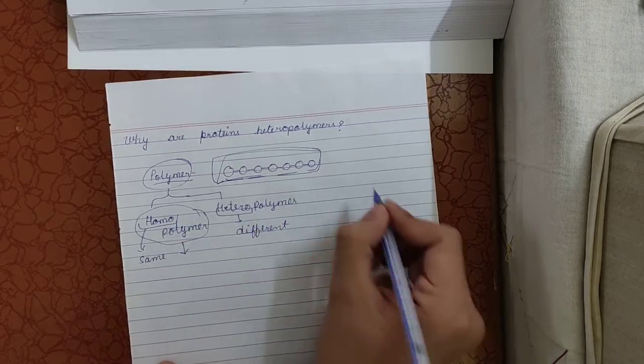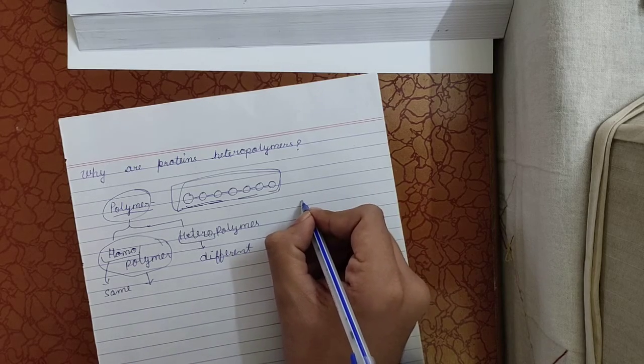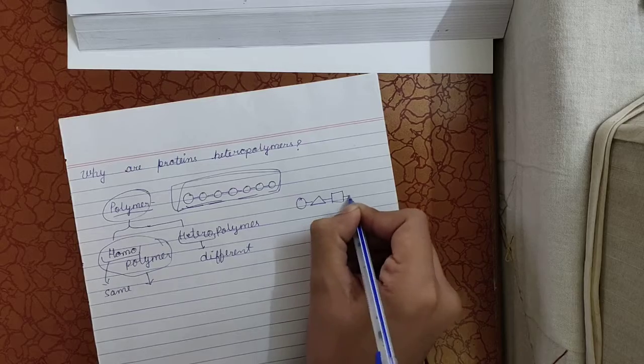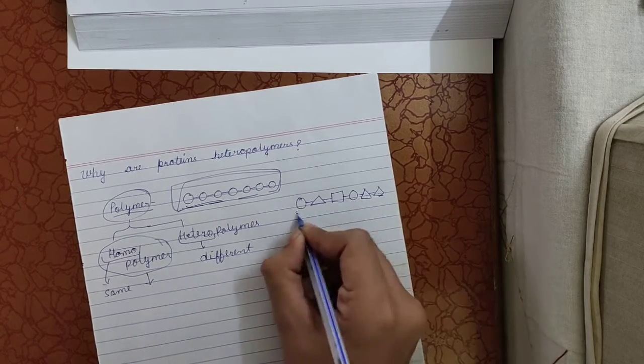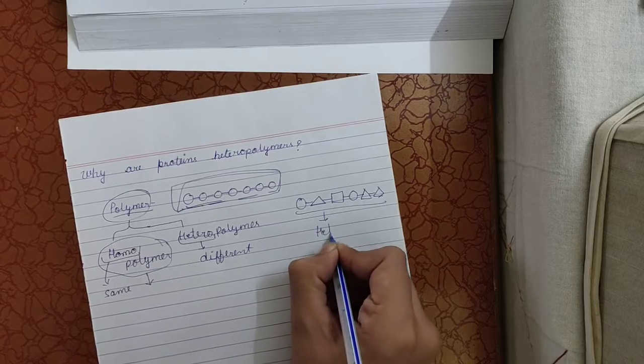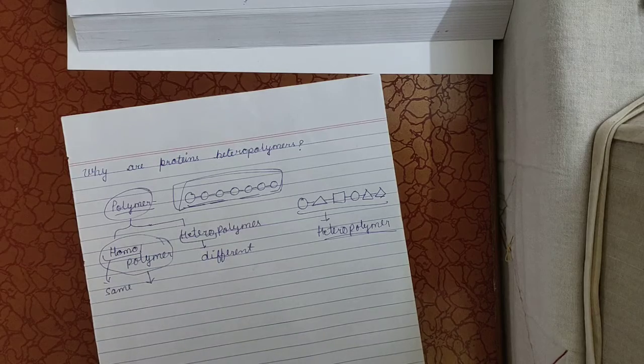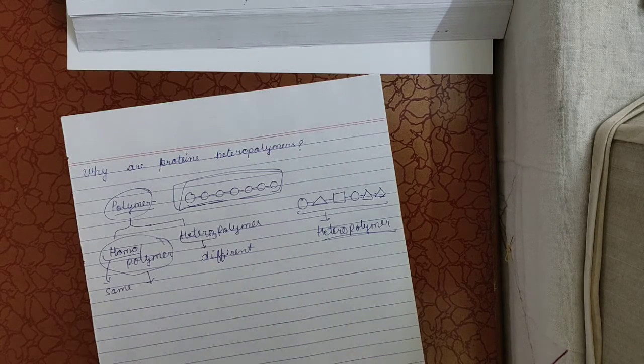And if all the structures - I mean the repeating structures in a polymer - are different like this, then it will be known as heteropolymer. I think you have grasped the basic concept of homopolymer and heteropolymer.